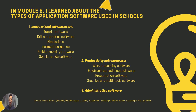In Module 5, I learned about the types of application software used in schools. These are the instructional software, such as tutorial, drill and practice software, simulations, instructional games, problem-solving software, and special needs software. We also have the productivity software, which includes word processing, electronic spreadsheet, presentation software, and graphics and multimedia software. And finally, we have the administrative software.